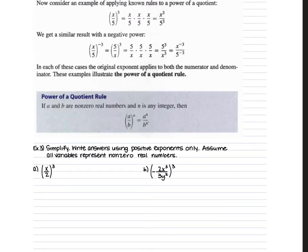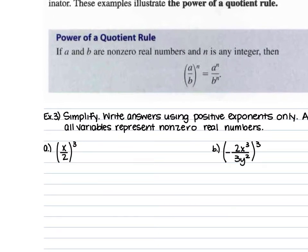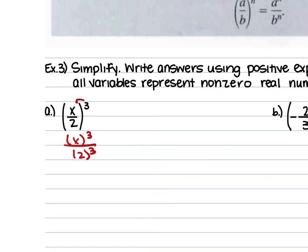Next we're dealing with fractions being raised to powers. For example 3a, we have x over 2 all raised to the 3rd power. When we have a fraction raised to a power, that power applies to both the numerator and the denominator. So we rewrite this as x to the 3rd power over 2 to the 3rd power. x to the 3rd is just x cubed. 2 to the 3rd is 2 times itself 3 times, which is 8. So that gives us x cubed over 8.